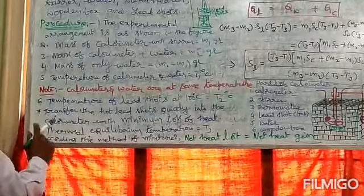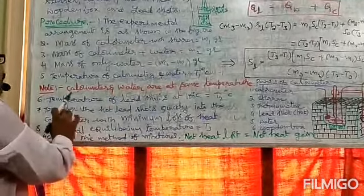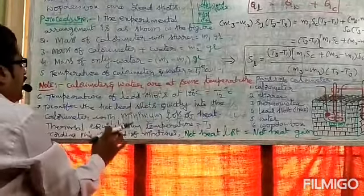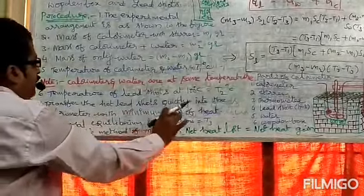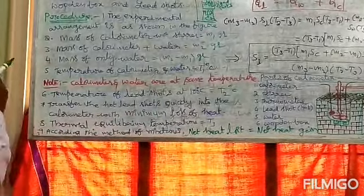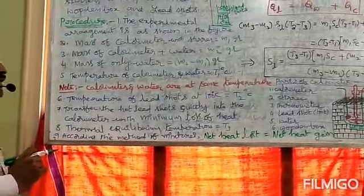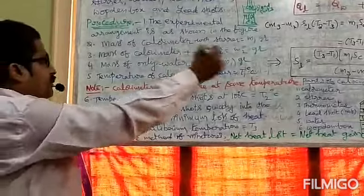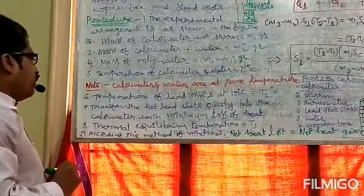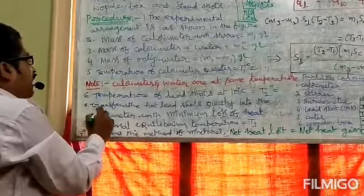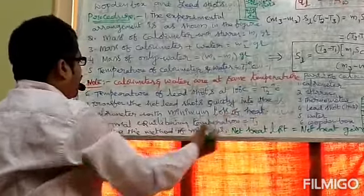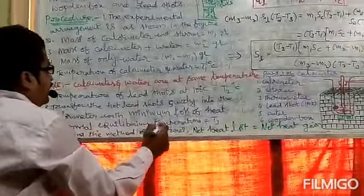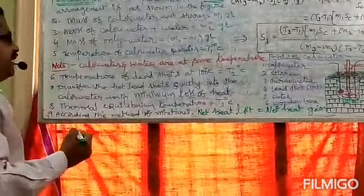Point number 7: Transfer the hot lead shots quickly into the calorimeter with minimum loss of heat. Point number 8: Let the thermal equilibrium temperature be T3 degrees centigrade.